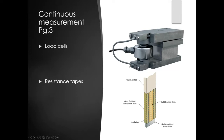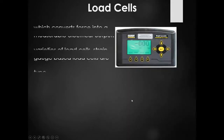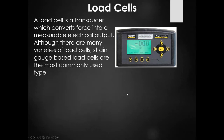First off we're going to look at load cells and resistance tapes. Load cells you may have had some experience with already — truck scales and things like that will use load cells similar to this. Resistance tapes are a completely different, unique kind of measuring device that I've never actually worked with myself. But it's an interesting kind of semi-primitive technology with some unique applications that we'll look at. A load cell is a transducer which converts force into a measurable electrical output. There are many different varieties in terms of construction, but operationally they're all basically the same.